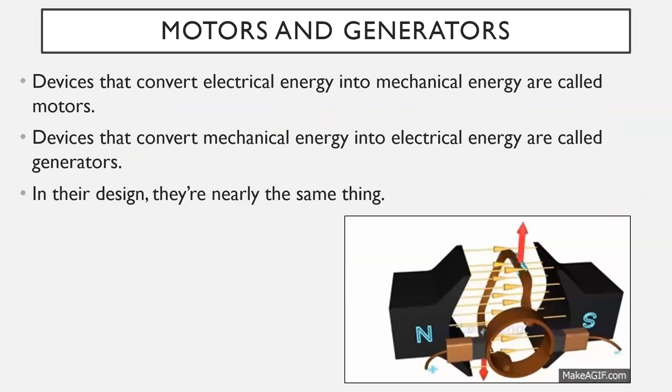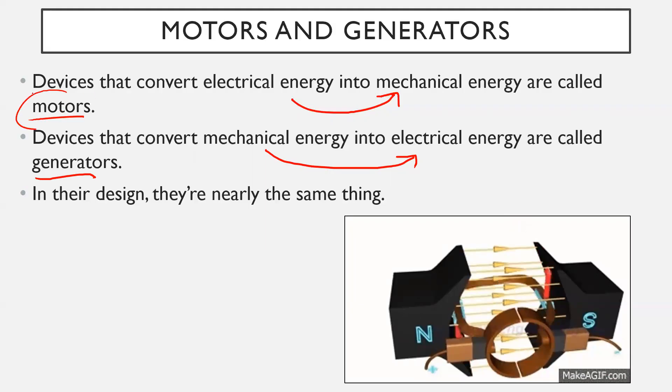Next up motors and generators. This is what can be a little bit tough. We need to make sure we have a really good understanding as to why these work. Devices that convert electrical energy into mechanical energy are called motors. Things that convert mechanical energy, so moving energy, into electrical energy are called generators. In their design they're nearly the exact same thing. They're not fundamentally different. It's just a motor has a power supply and a generator does not, but you have to be the one providing that mechanical energy to create the electrical energy in a generator. You have to have something that provides that mechanical energy, that movement to actually get it to spin.